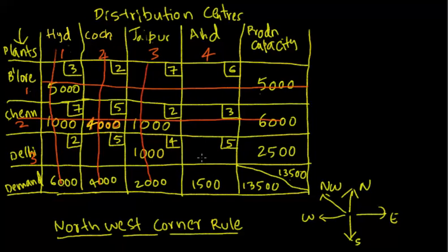I'm left with only one cell — no other alternative. So I'll fill whatever is left at Delhi plant, which happens to be 1500 units. I'll ship the entire 1500 units from Delhi plant to Ahmedabad distribution center, which has a 1500-unit requirement. Thus we have completed the Northwest corner rule.